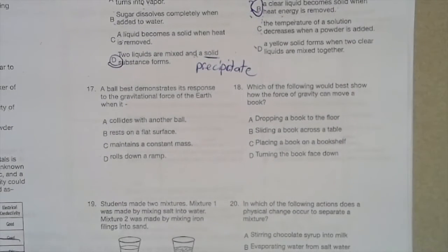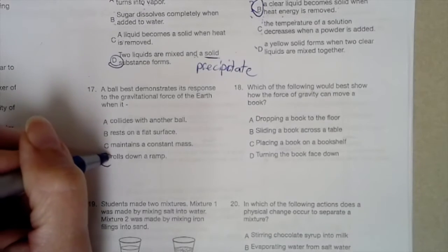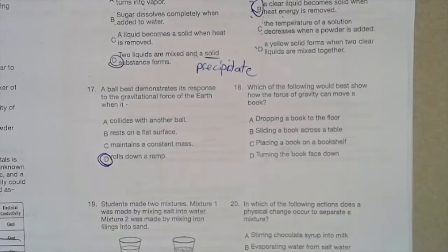Number 17. A ball best demonstrates its response to gravitational force of the Earth when it collides with another ball, rests on a flat surface, maintains a constant mass, rolls down a ramp. Gravity, an example of that would be rolling down a ramp. What's going to make it roll down the ramp? The force of gravity.